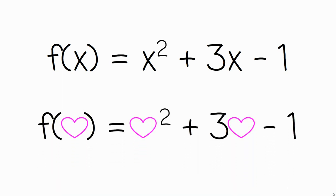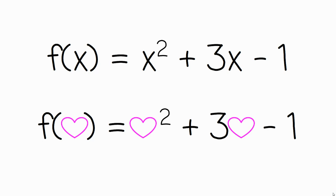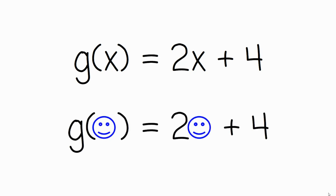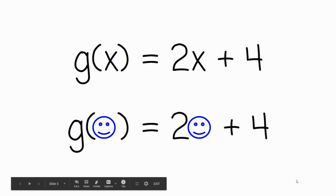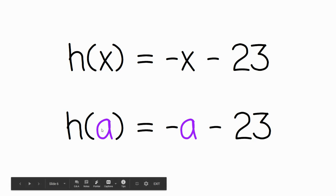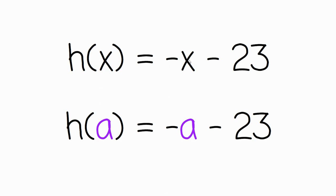Look and tell me what do you notice is happening here — what's the one difference between the top one and the bottom one? Hopefully you're screaming: you stuck hearts everywhere there's an X! Let's look at another one — here's one called G of X. You put smiley faces everywhere there's an X. There was an X here and I stuck a smiley face. And then look at this one — everywhere there was an X, I put an A.